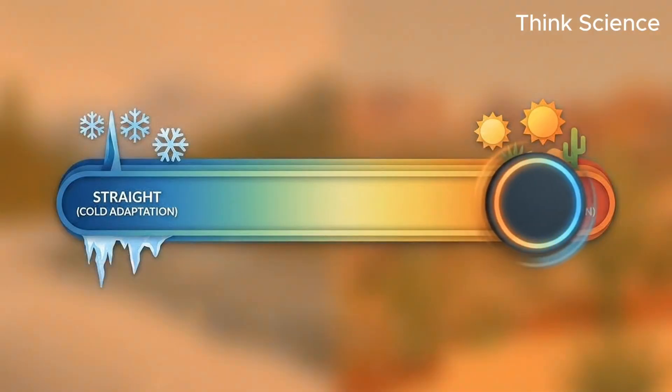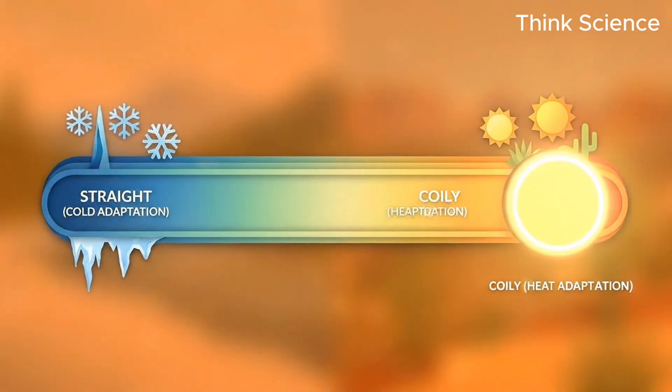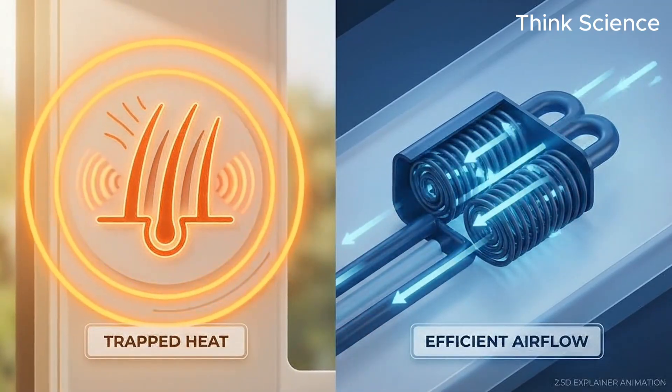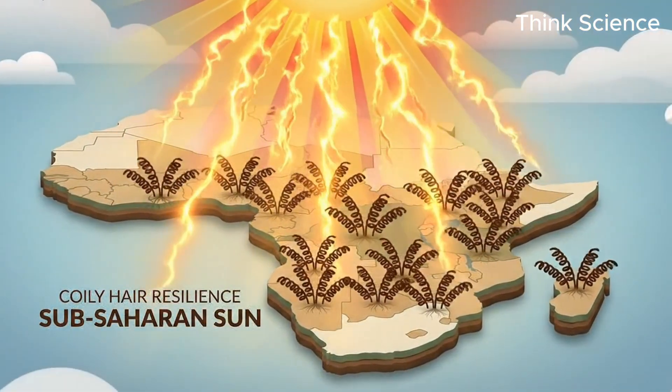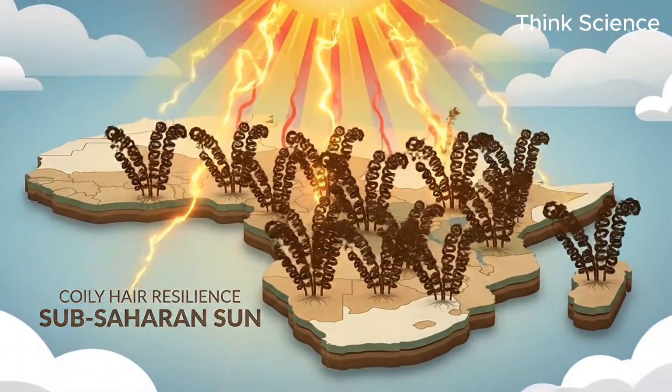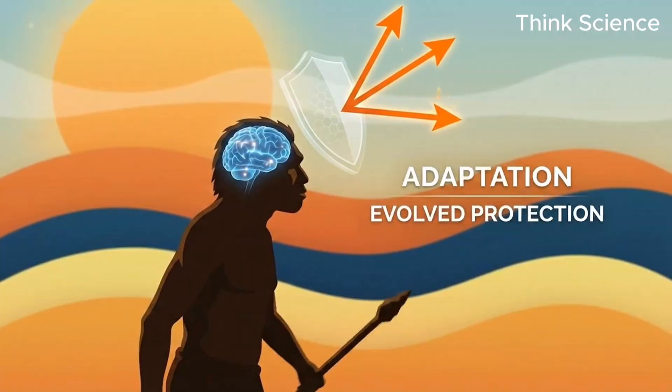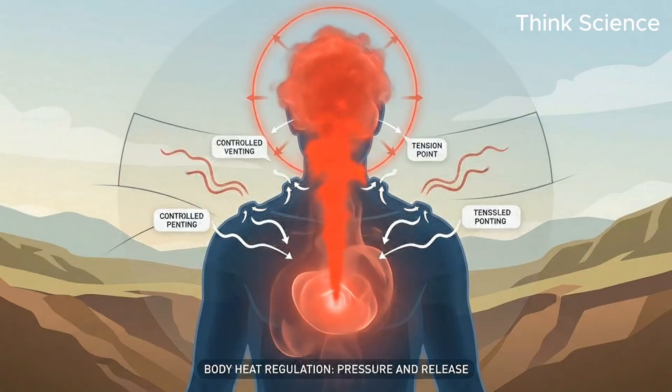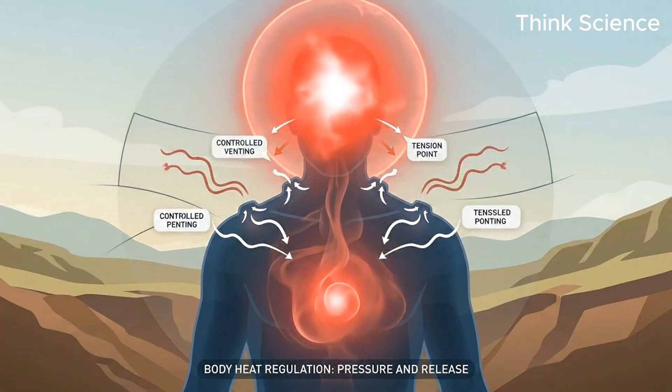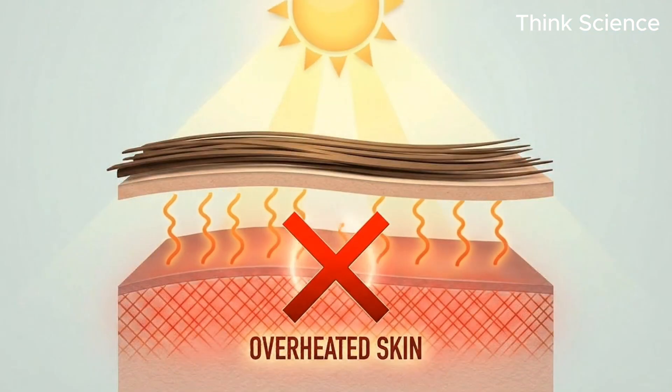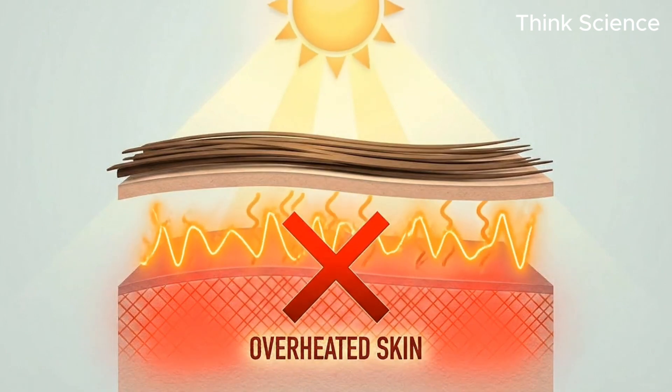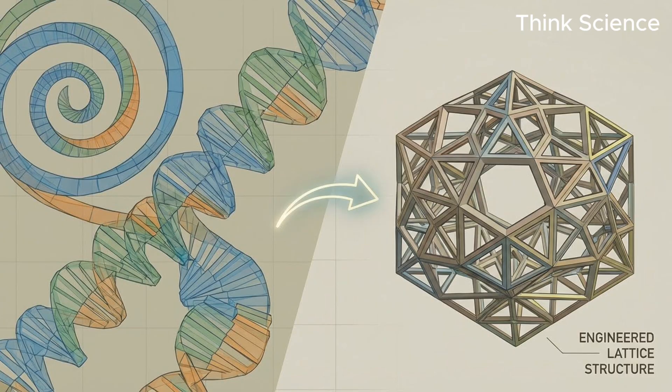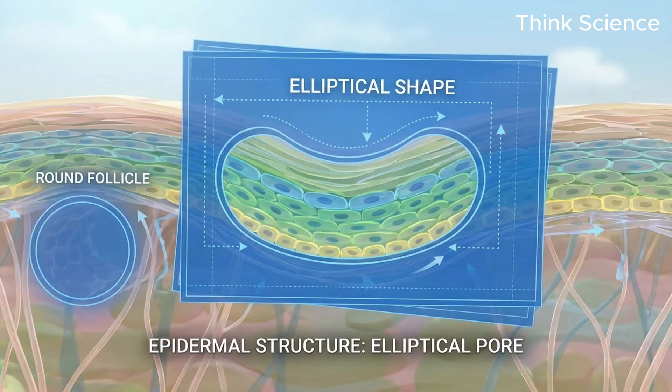Now, let's pivot to the complete opposite end of the spectrum: coily hair. If straight hair is a heat trap, coily hair is a highly advanced cooling system. This texture evolved as a specialized response to the intense, direct solar radiation of sub-Saharan Africa. The challenge here was contradictory. Early humans needed to protect their brains from the scorching sun, but they also needed to dump body heat efficiently to avoid heat stroke. A solid mat of straight hair would have been disastrous because it traps heat against the skin. Coily hair solved this engineering problem with geometry.